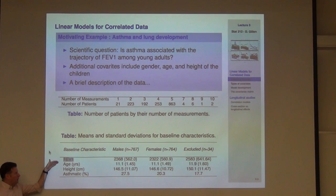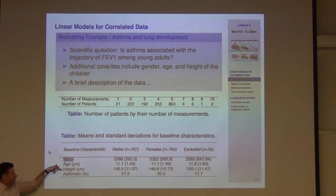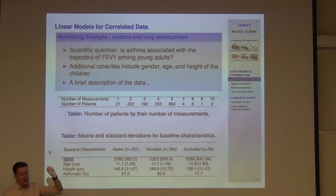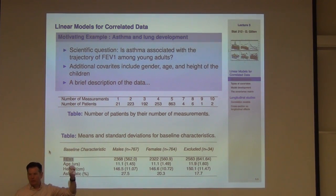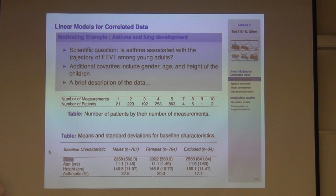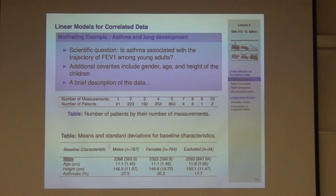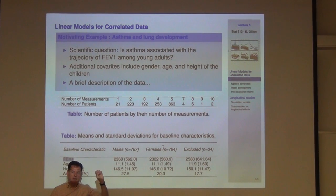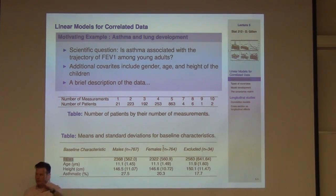FEV, age, and height are what we consider time-varying covariates — they are changing as a function of time as I follow subjects. As opposed to something like asthma status up in the column headers, which we would consider a time-invariant covariate, or cluster-invariant.